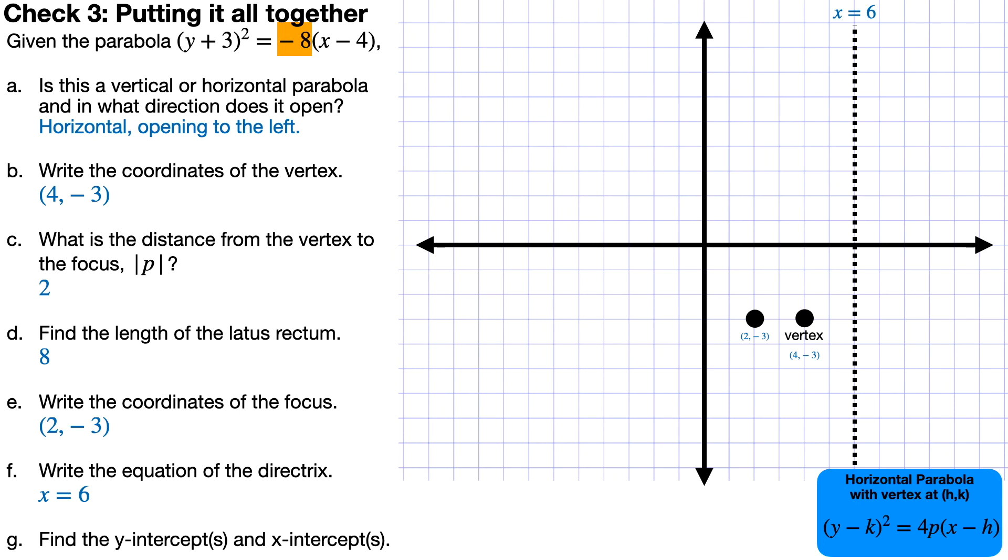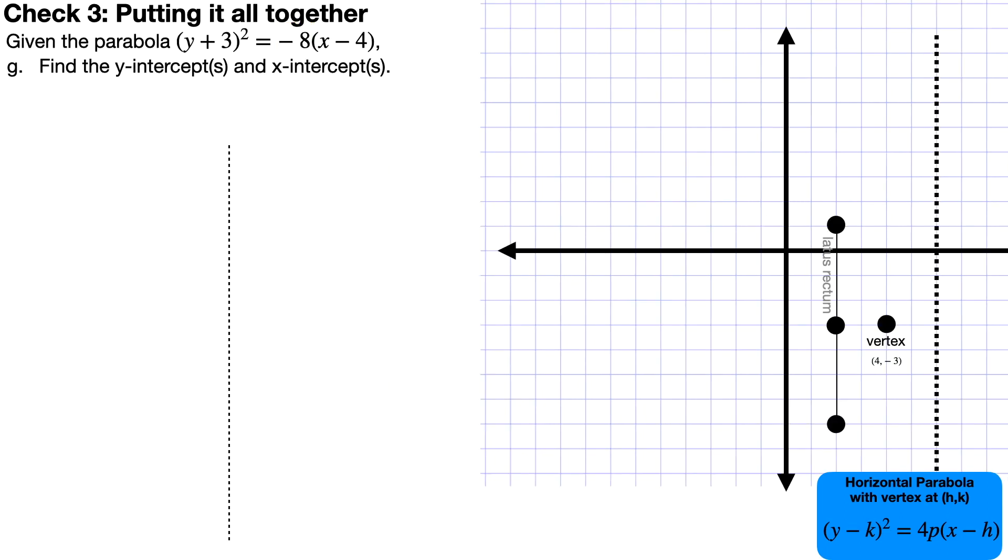Lastly, we know the latus rectum has a length of 8 because that's literally the number in the equation. And so how do we get a length of 8? Well, the idea is you go 4 up and 4 down from the focus. It's a focal width. So you go up and down by 4 to get a grand total of 8 for that latus rectum. And as you see, it's going to curve out to the left and what is left is the y-intercepts and the x-intercepts.